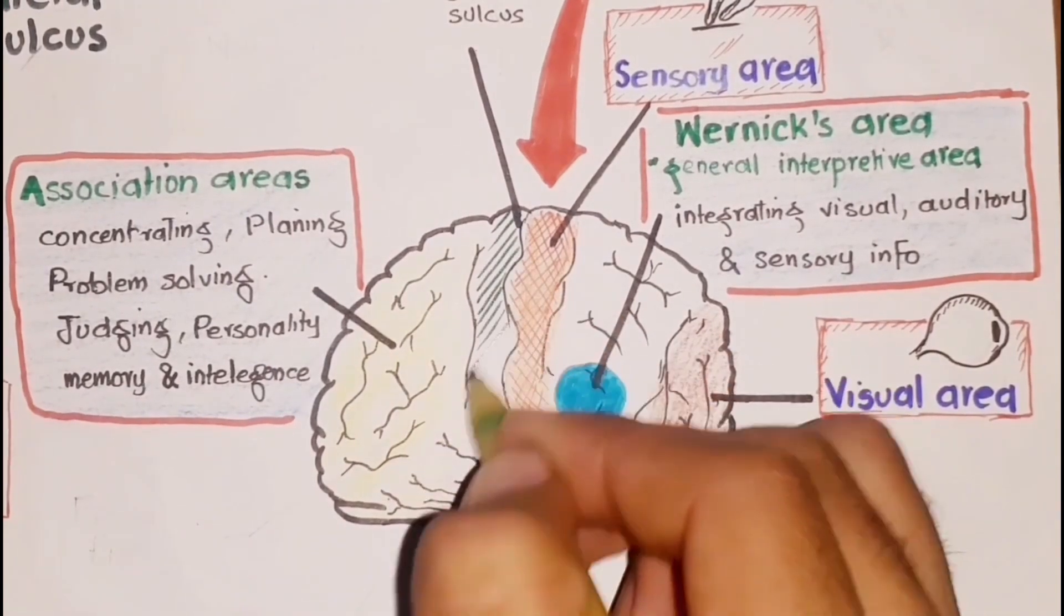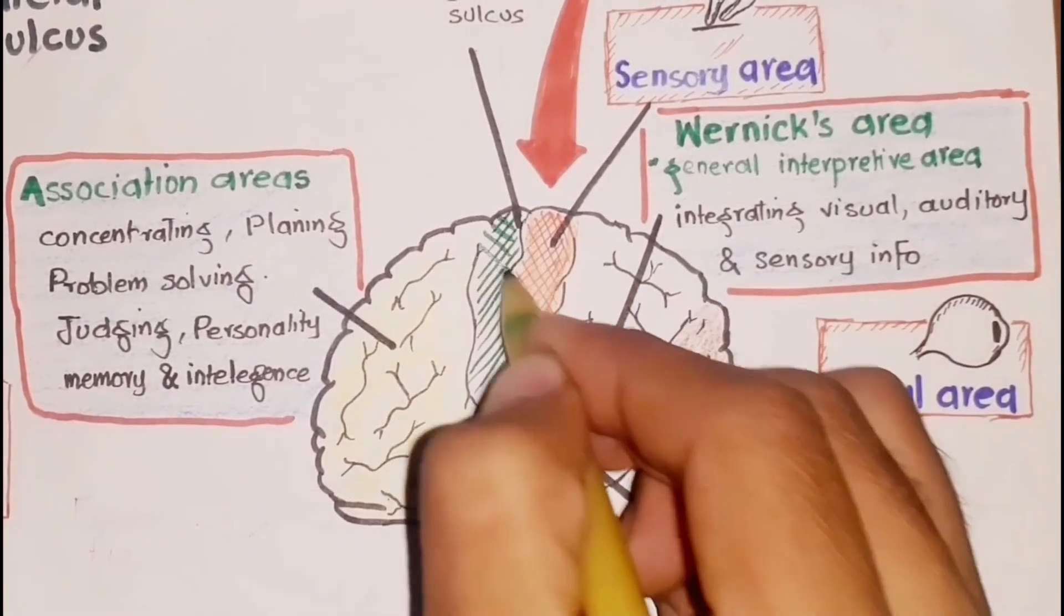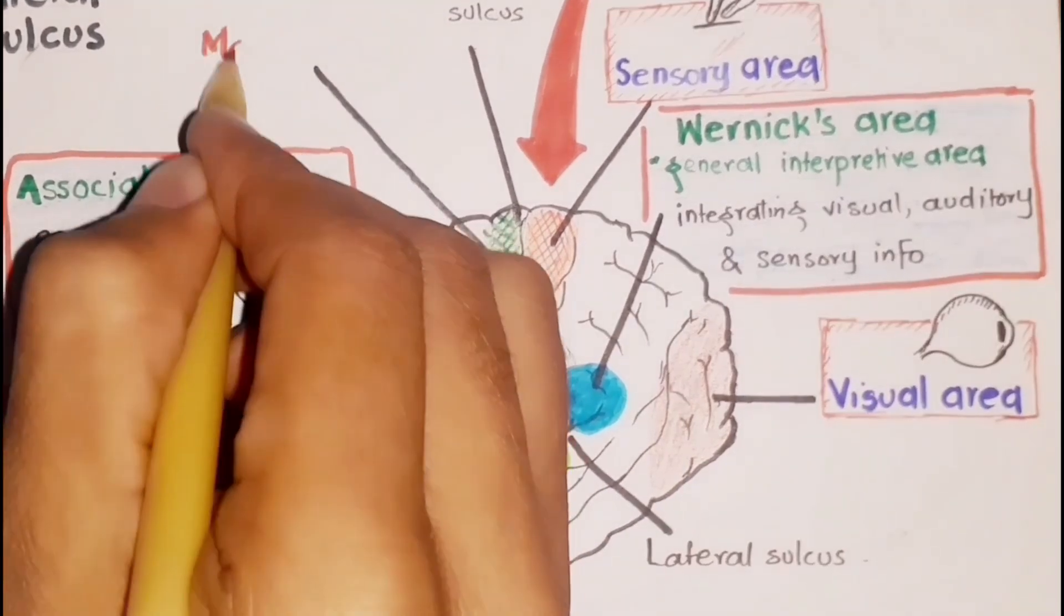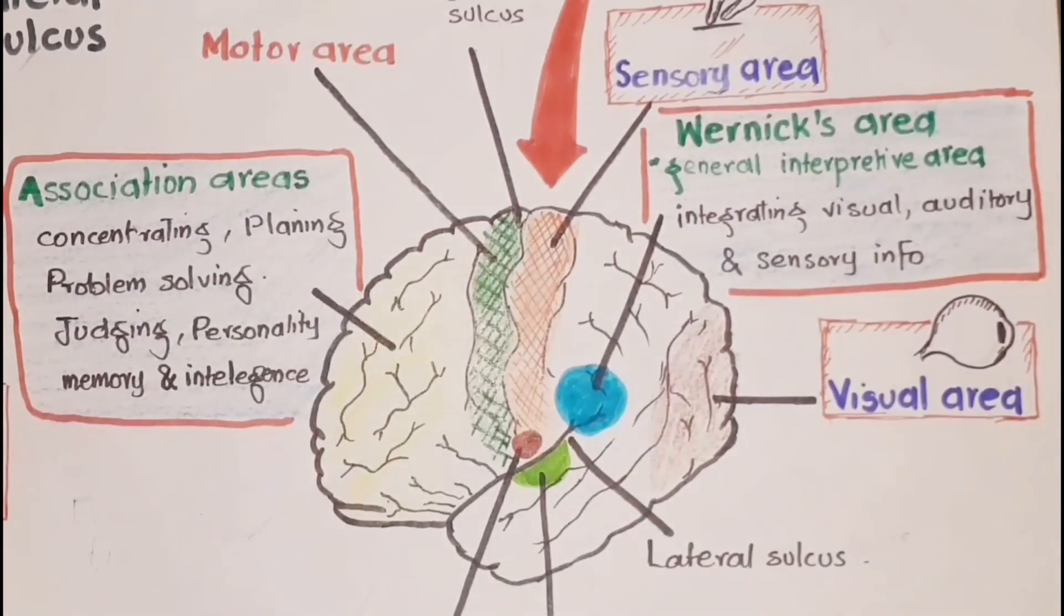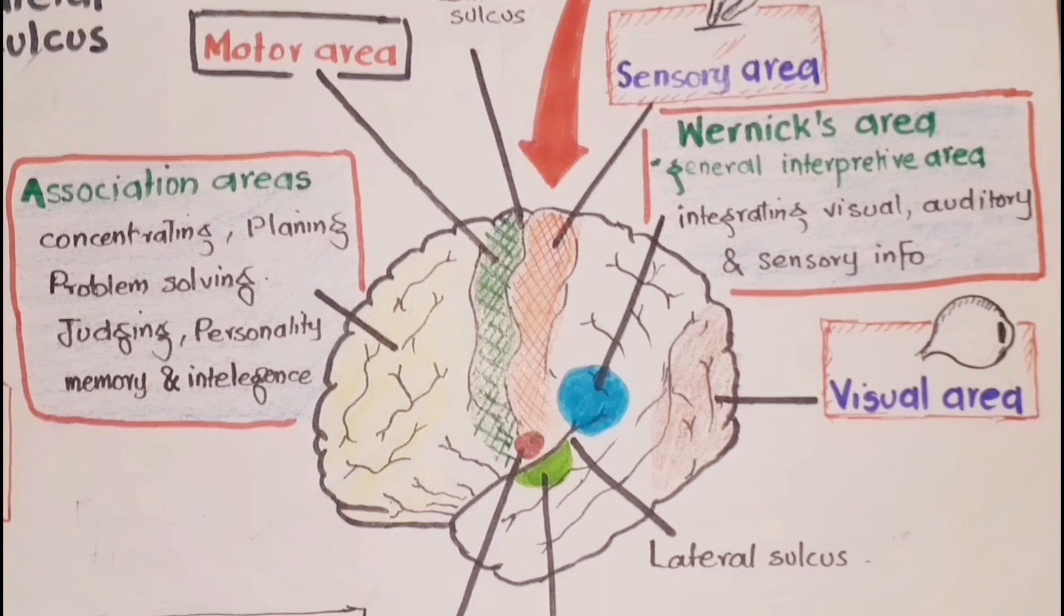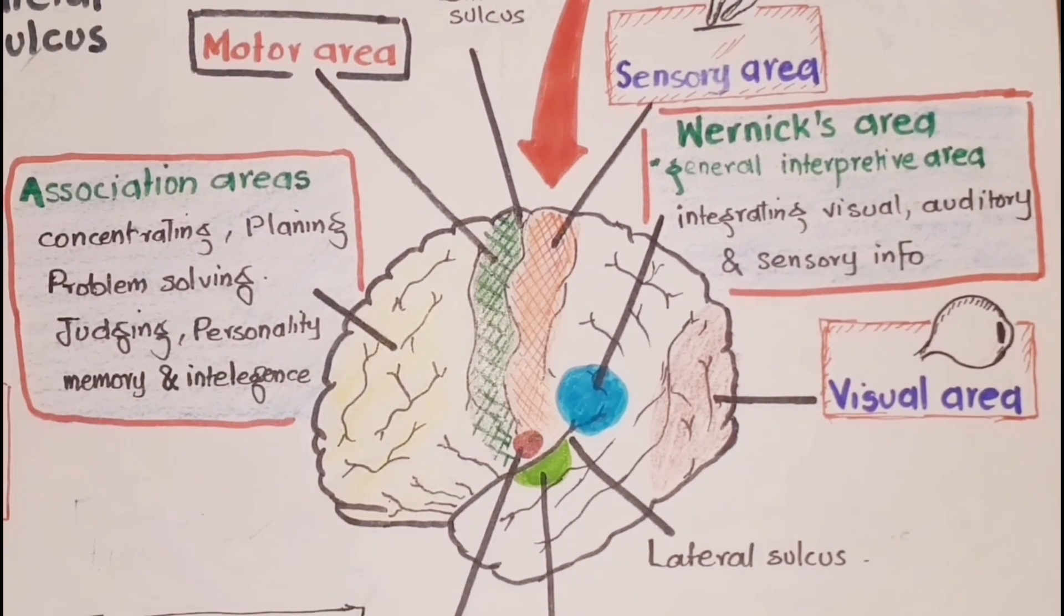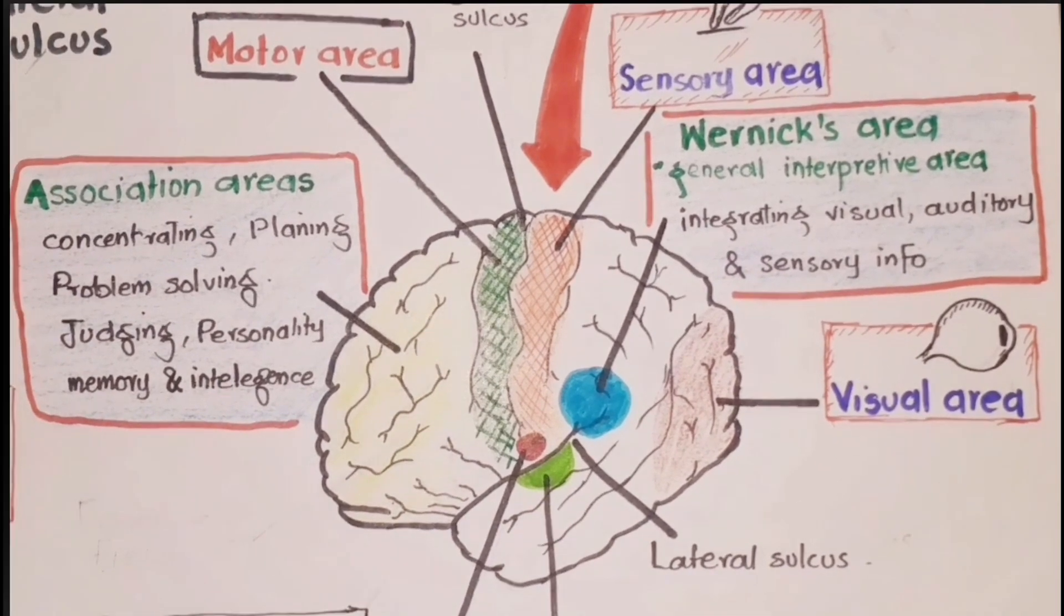Motor areas control the execution of voluntary movements. The primary motor areas of the cerebral cortex lie in the frontal lobes, just in front of the central sulcus.